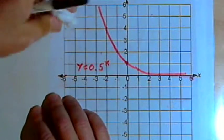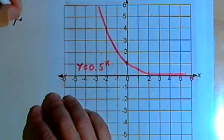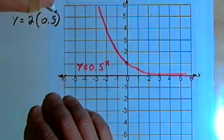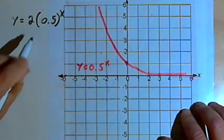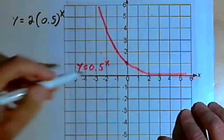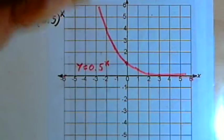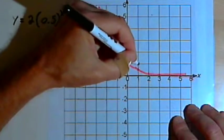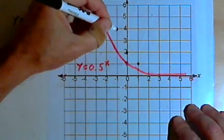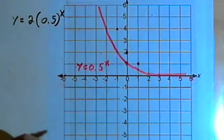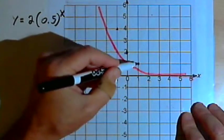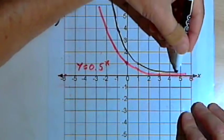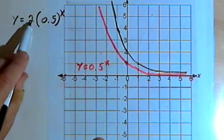We can also stretch this. So let's try y equals 2 times 0.5 to the x. That 2, as a coefficient, is going to take all of my y values and double them. It's going to stretch the graph. I'll have the same horizontal asymptote. I'm just going to have a graph that's stretched out more than the original, stretched out more vertically.